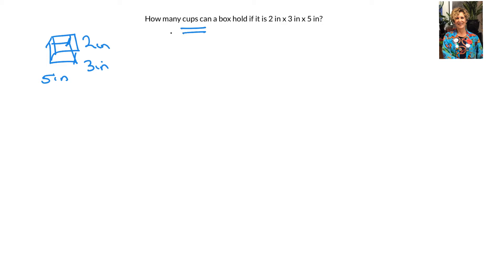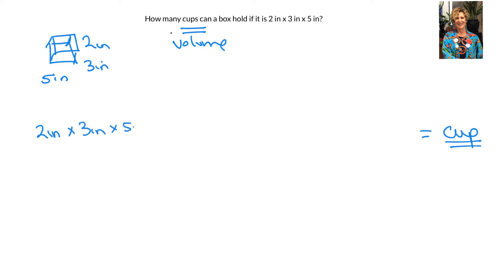The first thing you want to do in a factor labeling problem is write the unit that you want way on the right — this is going to be my finish line. I want cups, so if I want a single unit I'm going to start with a single unit. What I'm looking for here is volume, so I'm going to start with two inches times three inches times five inches, because to get volume I can multiply length times width times height.